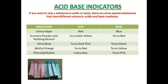So when blue litmus paper is poured into acidic solution, it turns red in color. And when red litmus paper is poured into basic solution, it turns blue in color. Similarly, an indicator which is turmeric powder with rubbing alcohol — in that also, acidic solution turns pale yellow in color, and basic solution turns red in color.